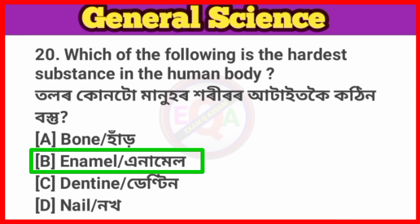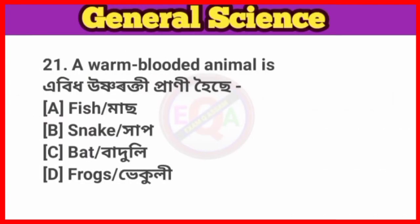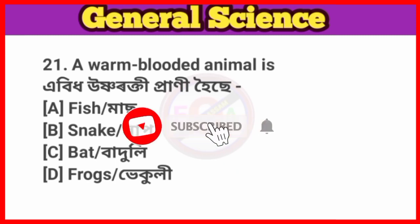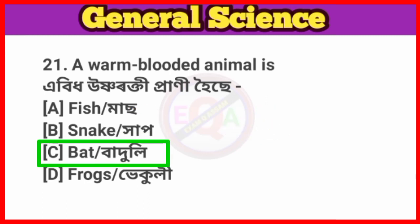Question No. 21. A warm-blooded animal is? Answer: Option C, Bird. Bird is a warm-blooded animal.